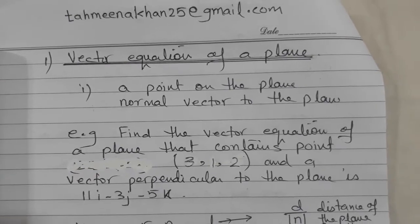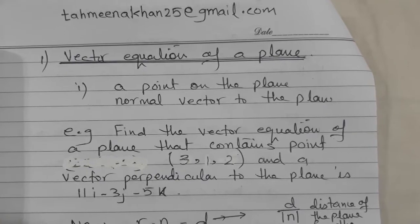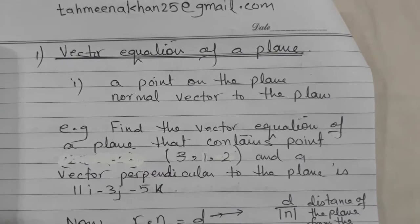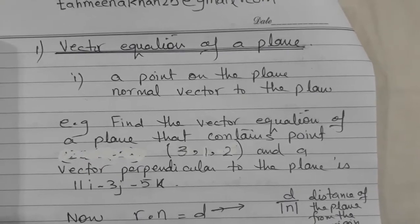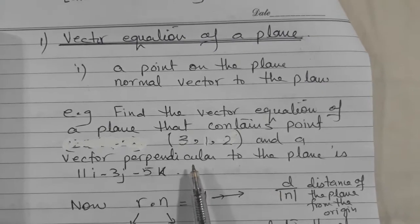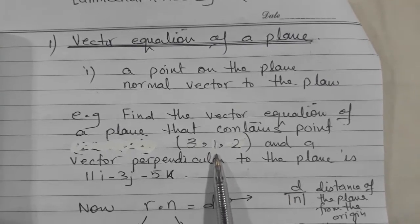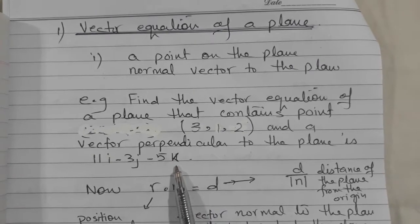To find the vector equation of a plane, you need to know a point on the plane and a normal vector to the plane. Now let's see there are two types or two possibilities. Number one possibility is that you are given a point on the plane and you are given the normal vector, perpendicular vector to the plane.